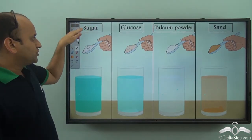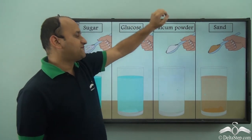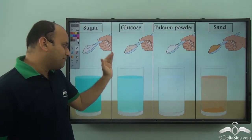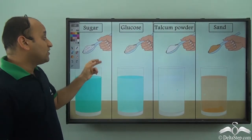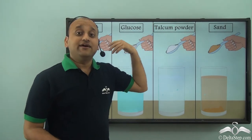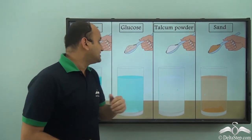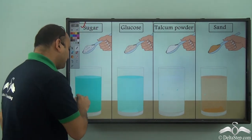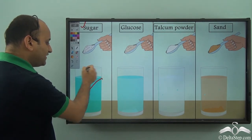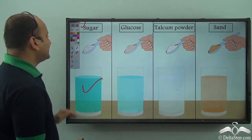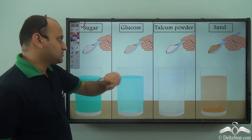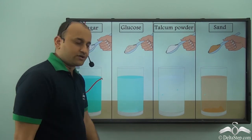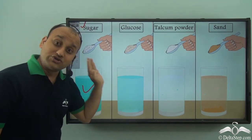Now let's see — we have sugar, glucose, talcum powder, and sand. Which of them will mix in water completely? Which is soluble and which is insoluble? If you add sugar to water, it will completely vanish — so definitely it is soluble. What about glucose? If you add glucose, it will again completely mix and vanish in water, so glucose is also soluble in water.